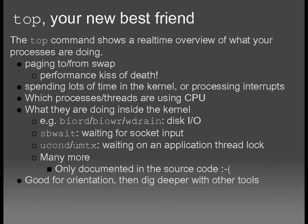`top` tells you things like whether the system is paging to and from swap, which can happen if you overload your system with too many live processes. The virtual memory system will keep the system running but very slowly when touching the disk. It will also tell you if your system is spending a lot of time in the kernel or processing interrupts, shows which processes and threads are using the CPU, and displays the process wait channel — a cryptic abbreviation showing where a process is blocked in the kernel.